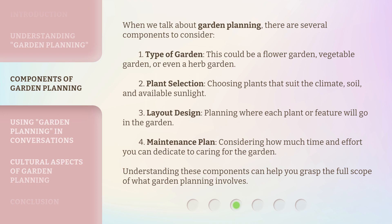When we talk about garden planning, there are several components to consider. First, type of garden — this could be a flower garden, vegetable garden, or even a herb garden. Second, plant selection — choosing plants that suit the climate, soil, and available sunlight.